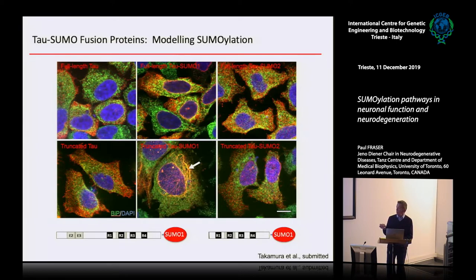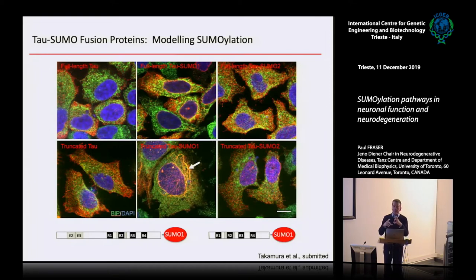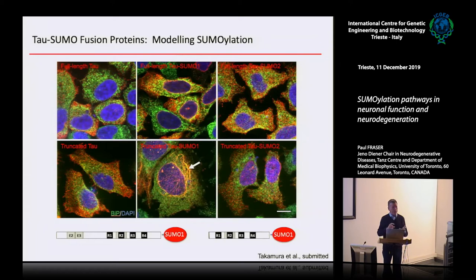Using fusion proteins to model SUMOylation, the full-length protein seems fine whether SUMO1 or SUMO2 modified. But if you take the truncated form — chopping off the first 150 residues to leave just the microtubule binding repeats — when it's SUMOylated by SUMO1, you get reticular staining and it starts to accumulate and aggregate within cells. The truncated form by itself or truncated SUMO2 shows really no effect. So there seems to be a specific connection between PSP, SUMO1 SUMOylation, and truncated tau that can promote disease.